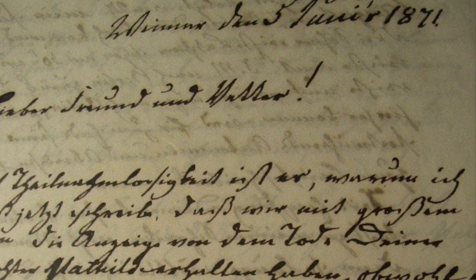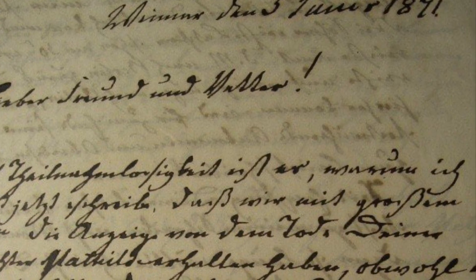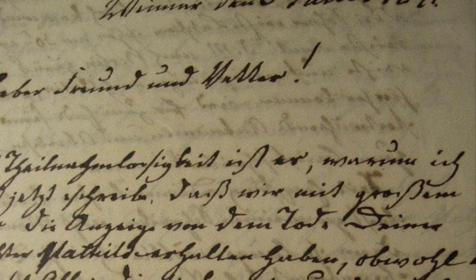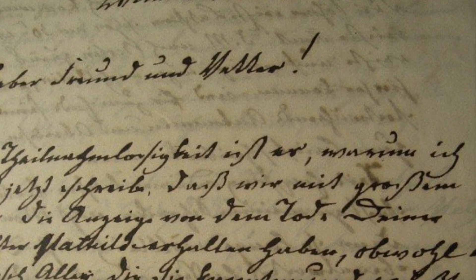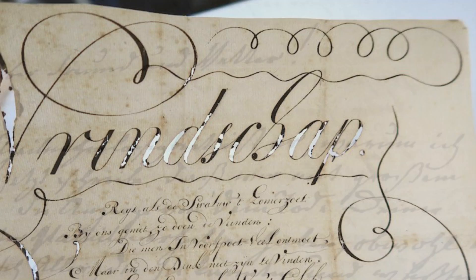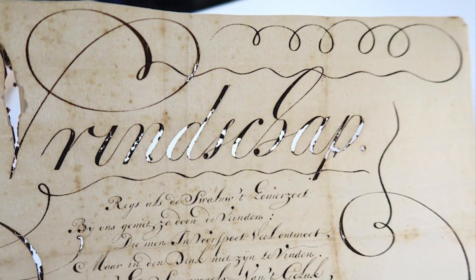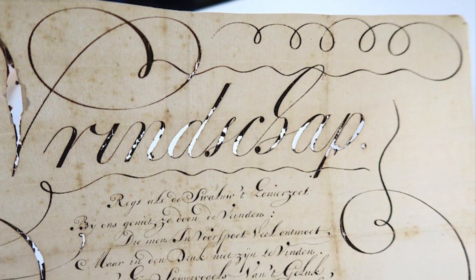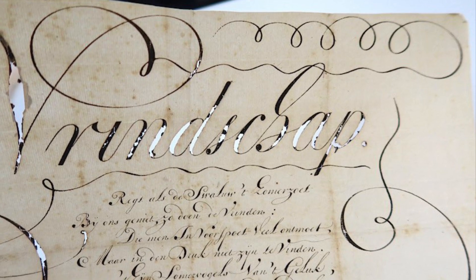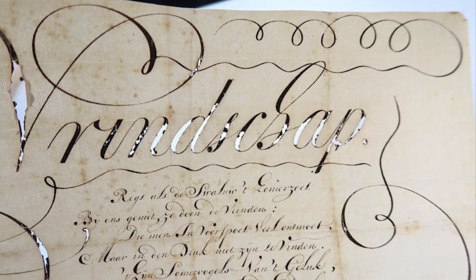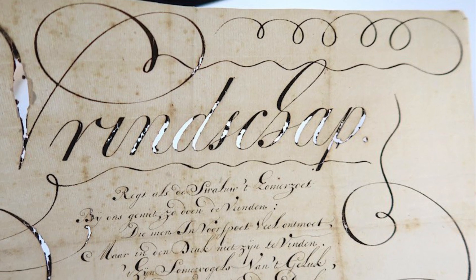Another reason why this ink was so popular is it was permanent compared to other inks. The only way that you could erase it would be scratching the parchment. One problem, however, is this ink actually degrades the paper or parchment over time, burning holes in it. This is due to the acidity. So if you look at many old documents written in iron gall ink, you will see holes burned where the words used to be.